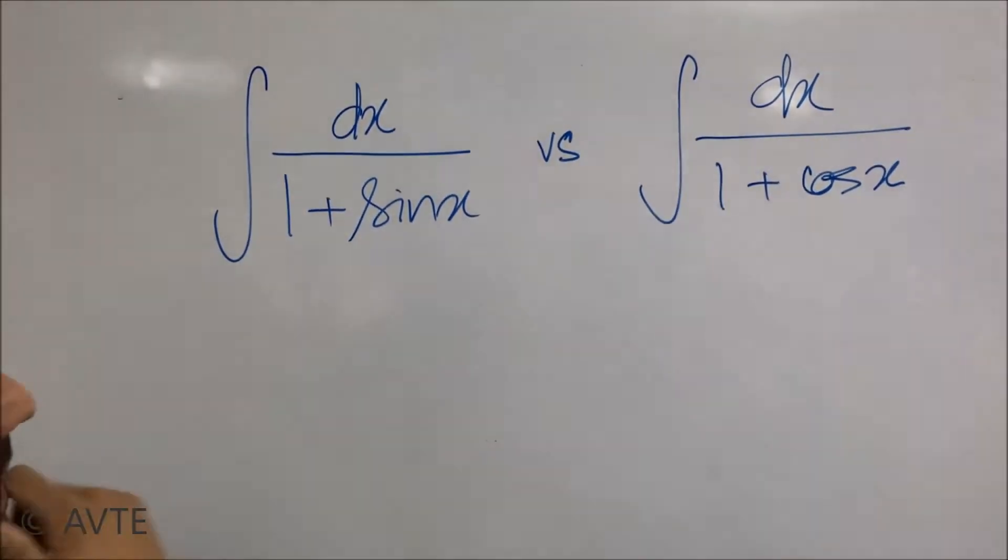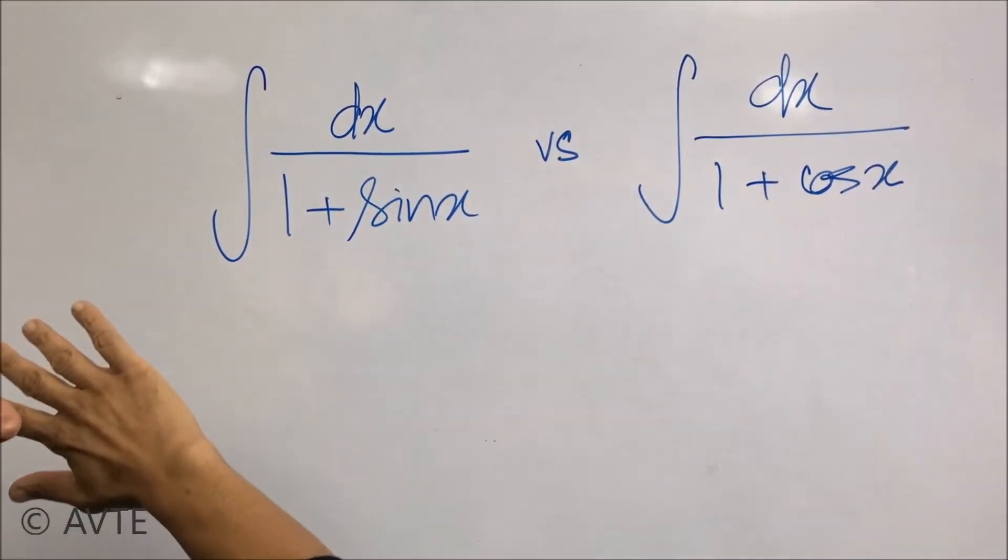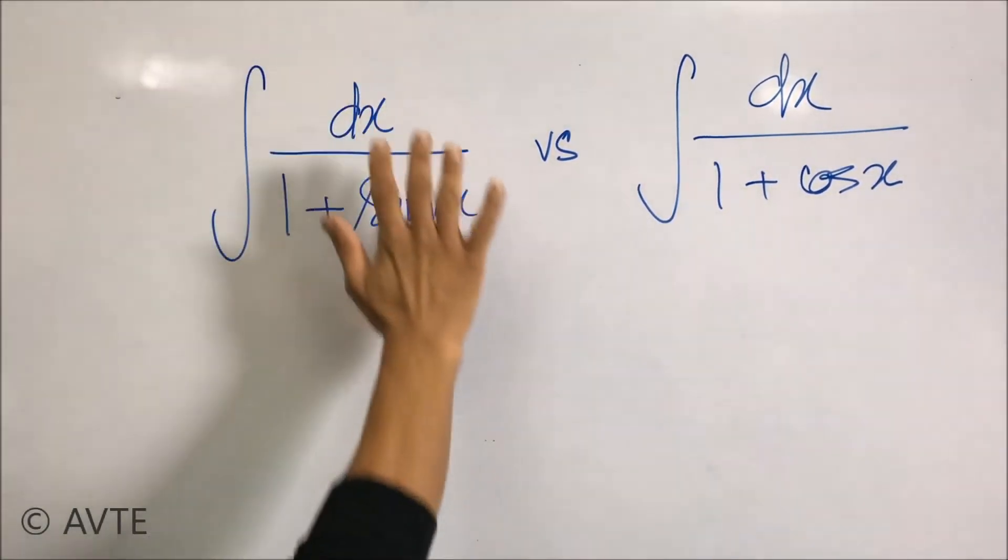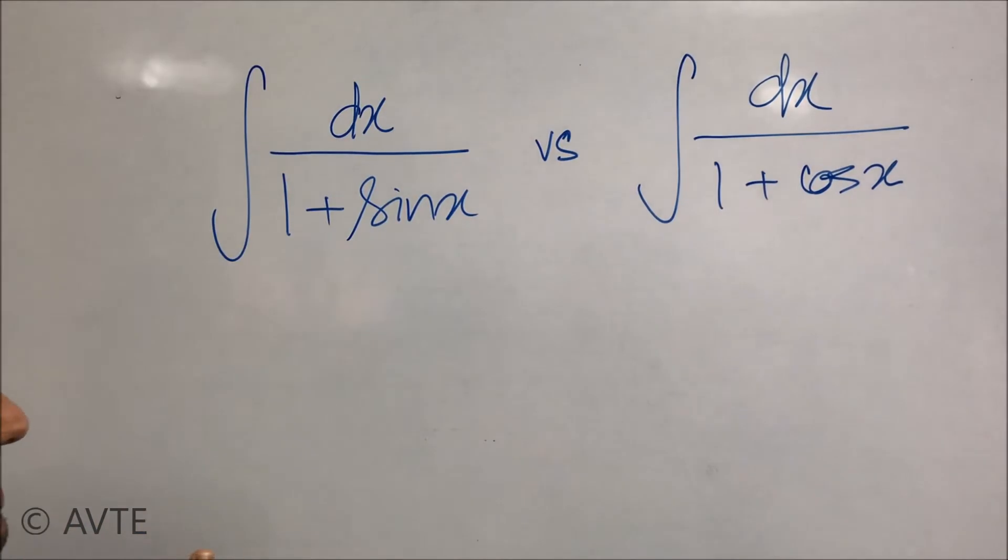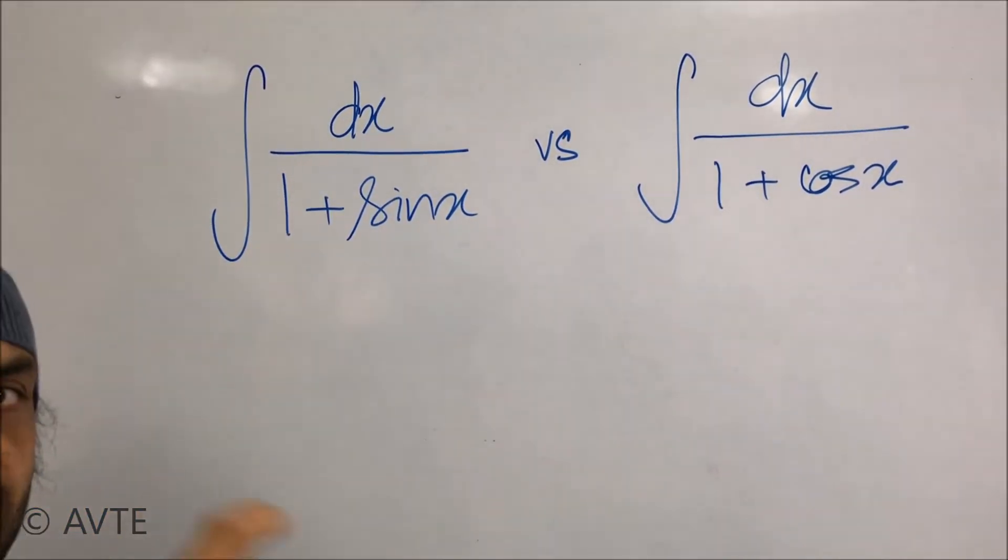Well, the questions look similar, but while solving, the approach is totally different. When you solve 1/(1+sin x), there are many methods - you can convert this into half angle in tangent, you can write this as cos(x/2) + sin(x/2) the whole square.